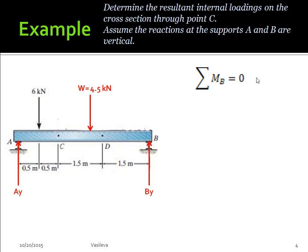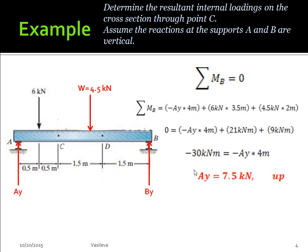So I need to solve for the total moment about point B. I did negative AY times 4 meters. The negative accounts for the fact that this AY will cause a clockwise direction. Plus 6 kilonewtons times 3.5 meters. It's plus because it'll cause a counterclockwise rotation. And plus 4.5 kilonewtons because that will also cause a counterclockwise rotation. Once we chug through the math, we end up with AY equals 7.5 kilonewtons. Because it ended up positive, it means that the way we drew it is correct. So AY is pointing up.